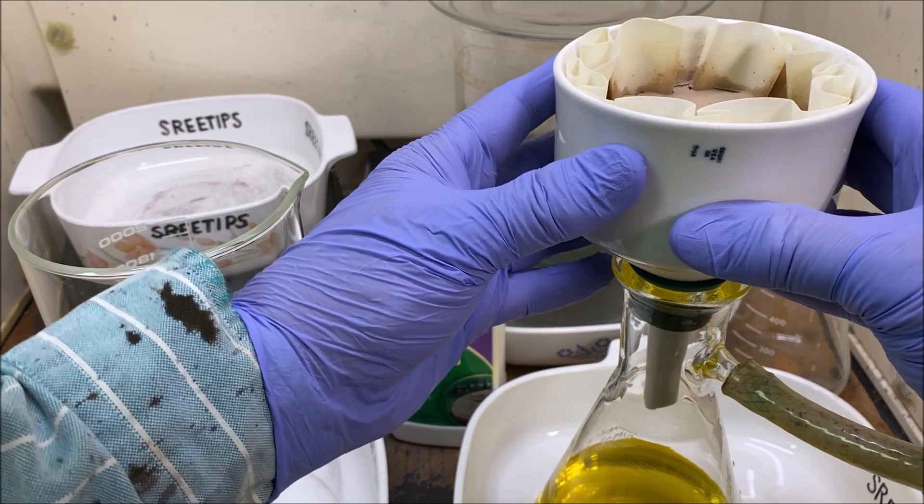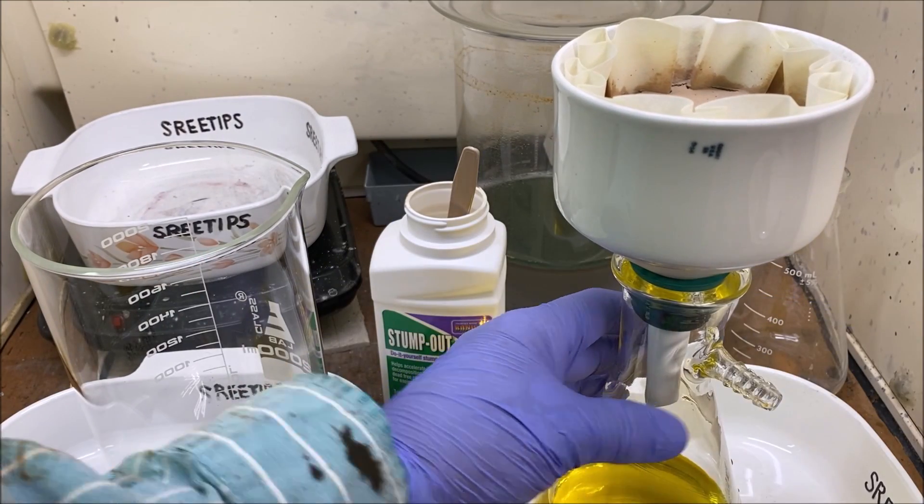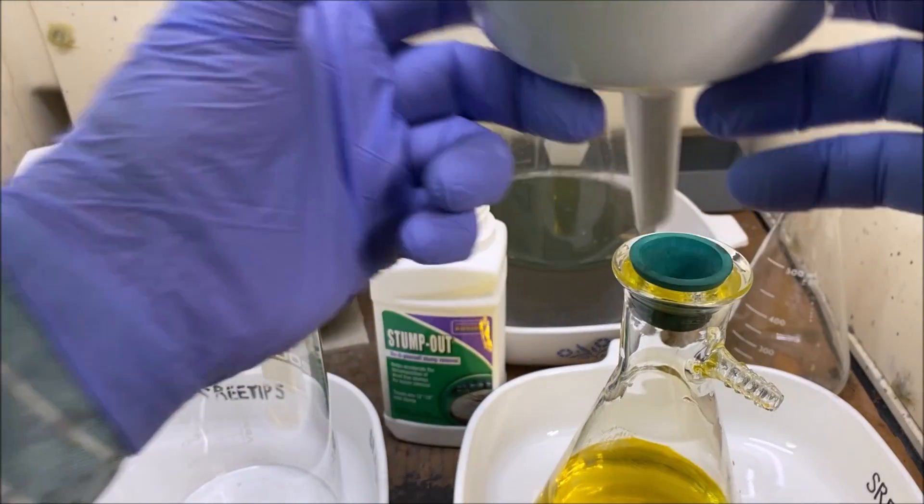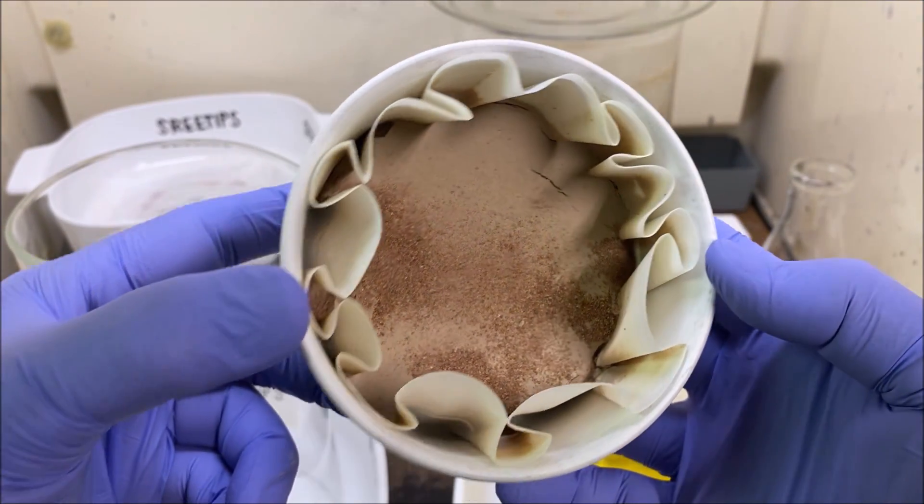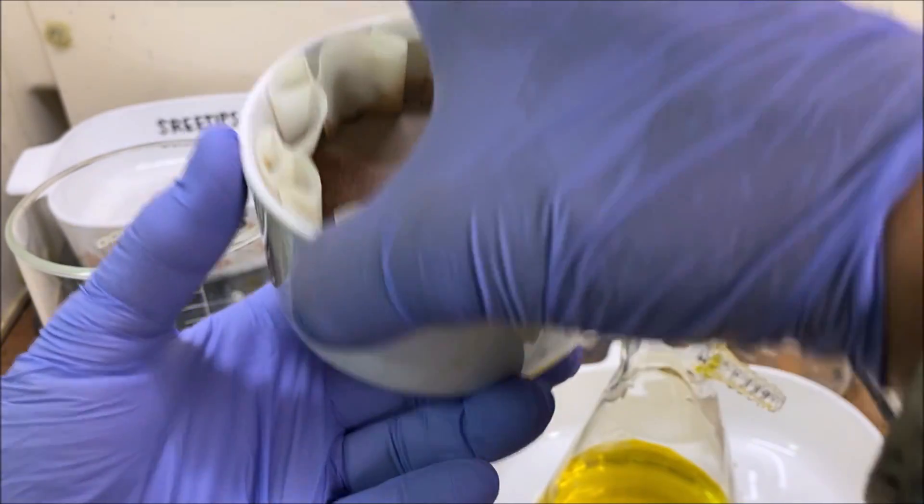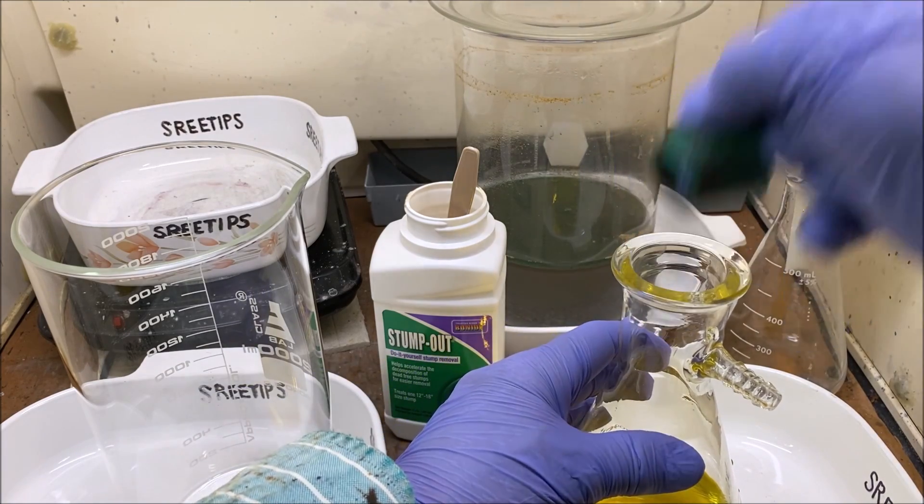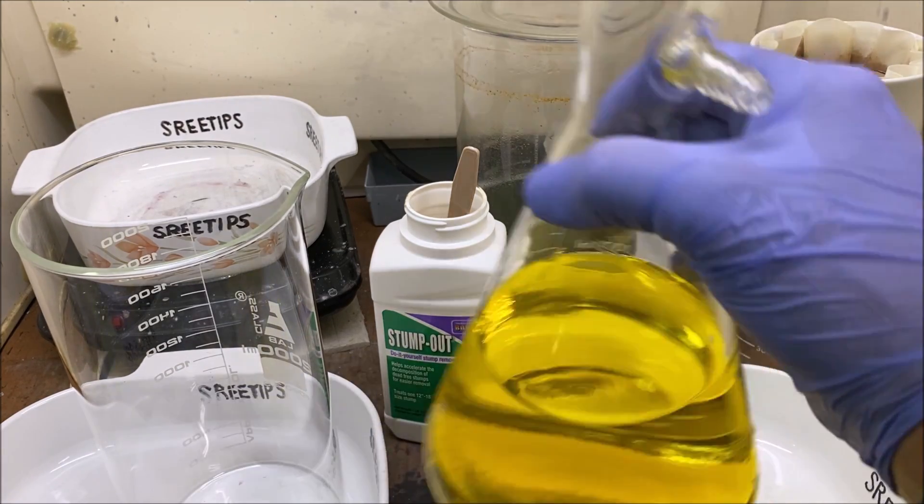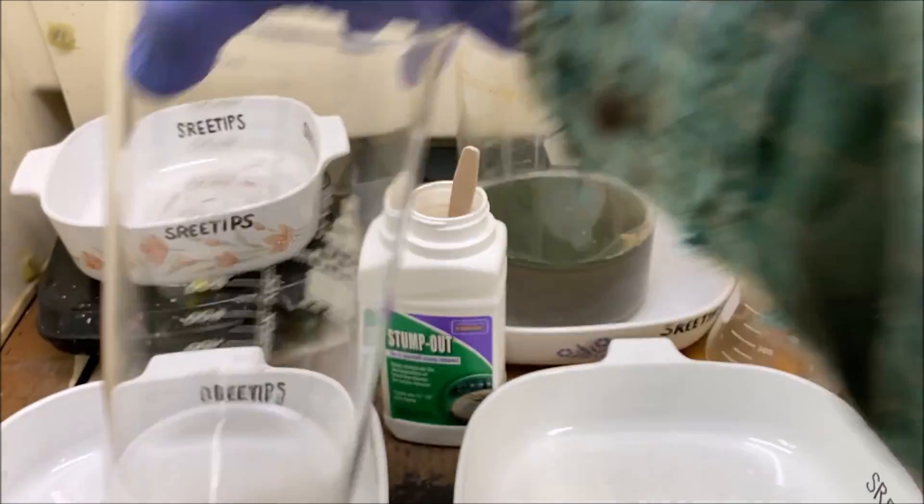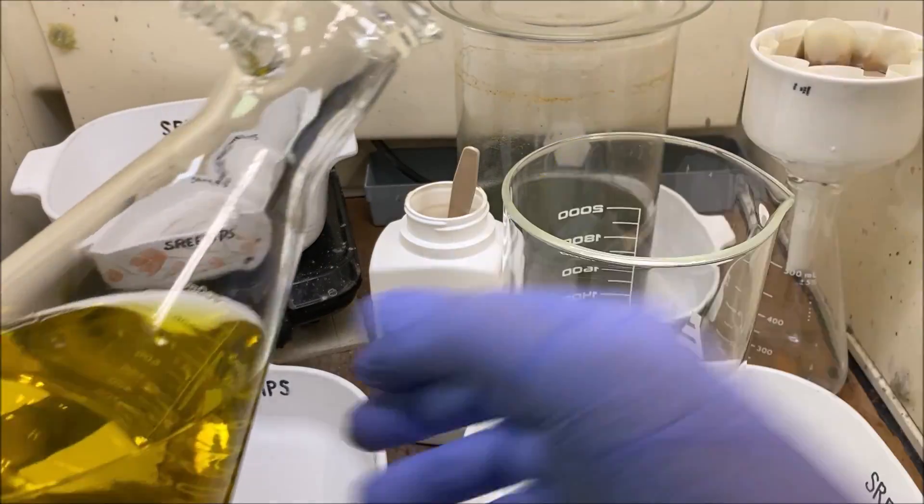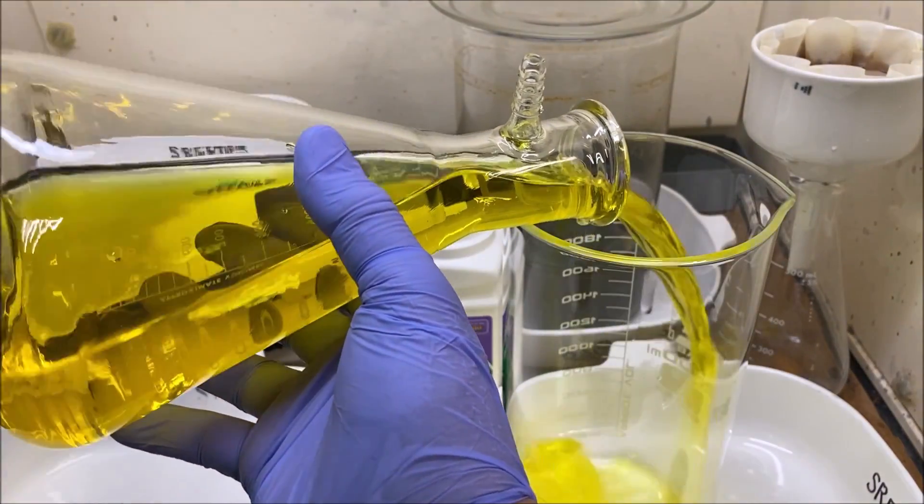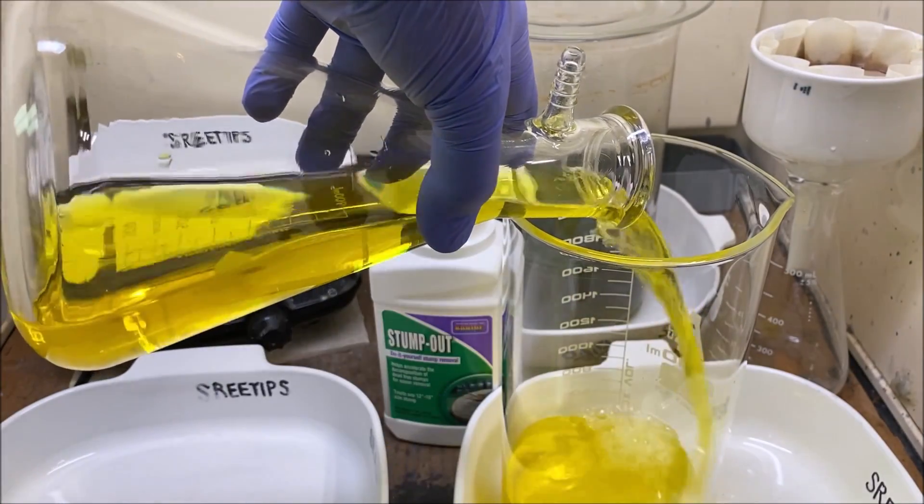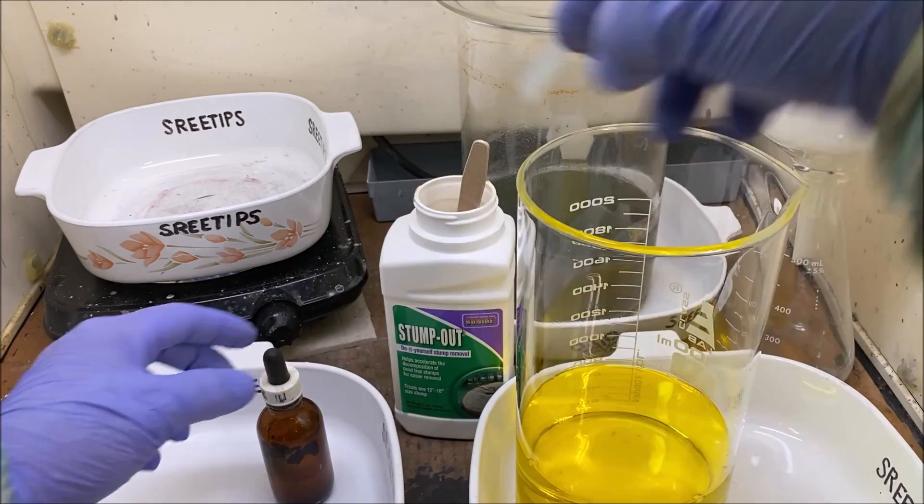I've got the solids all rinsed off in this funnel until the filtrate began to run colorless so we've got all the gold rinsed off here. Now what we'll do is add the gold solution to a clean beaker here. Let's test it with stannis, make sure we got gold in solution.